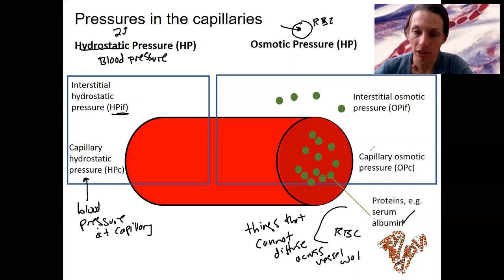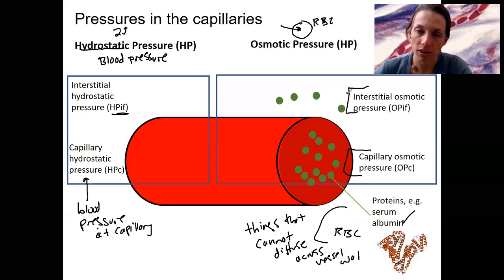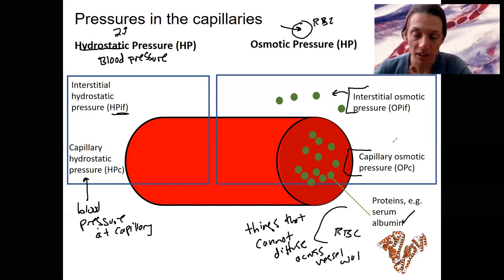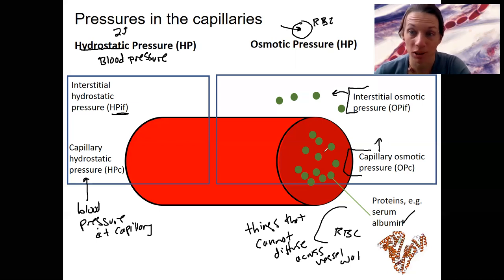The amount of solute in there contributes to osmotic pressure. There is a capillary osmotic pressure dependent on the concentration inside, and an interstitial osmotic pressure dependent on what's outside. The capillary osmotic pressure is always going to be higher than interstitial because there's more solute inside.